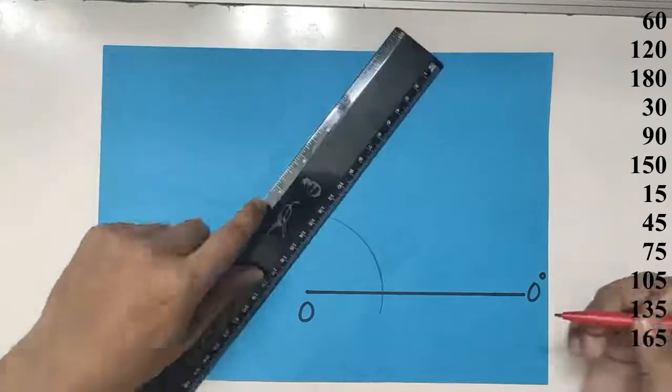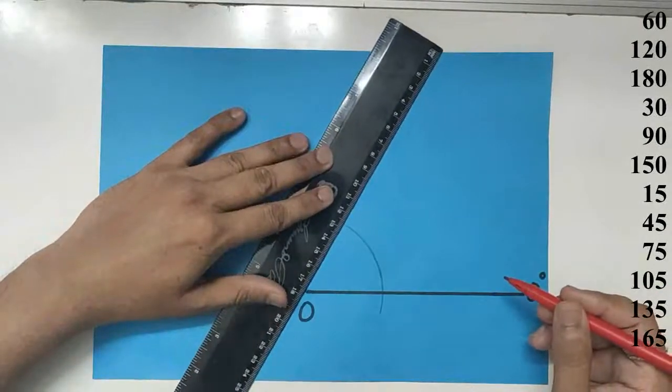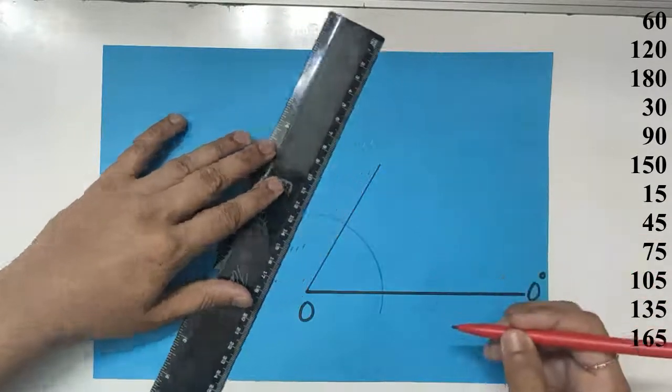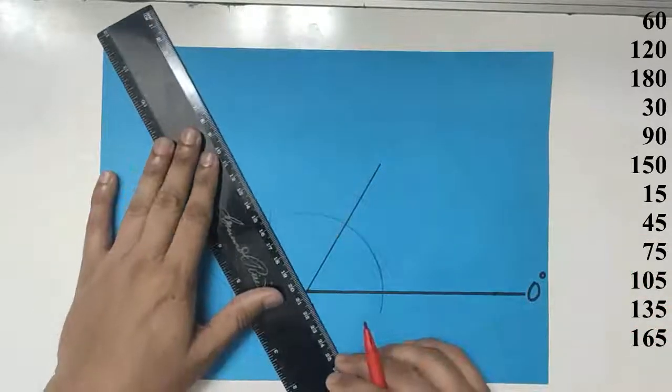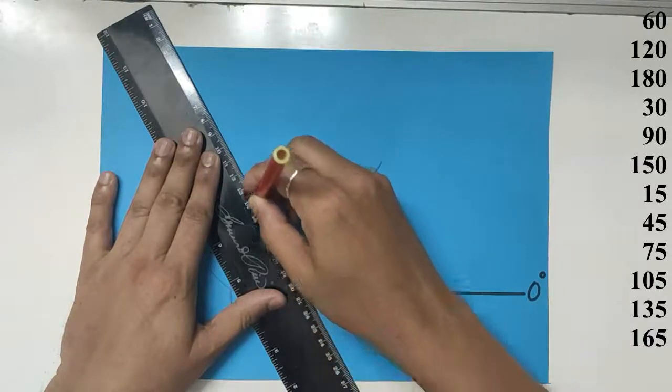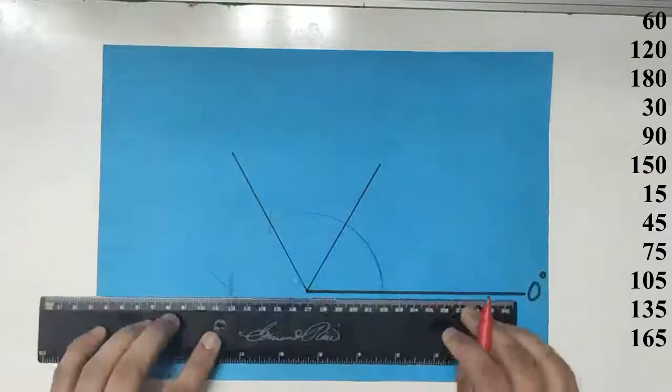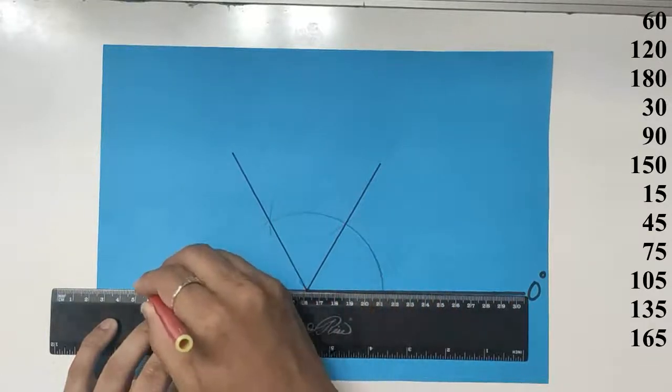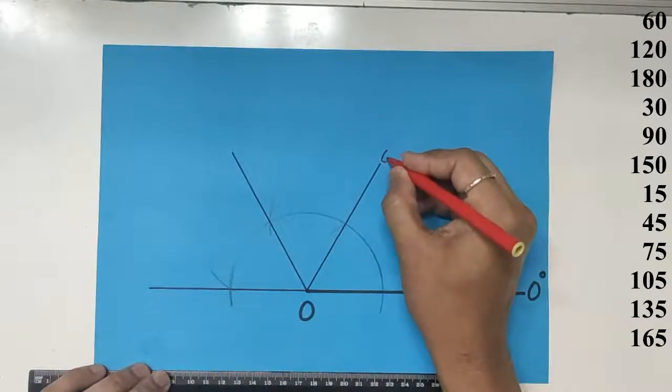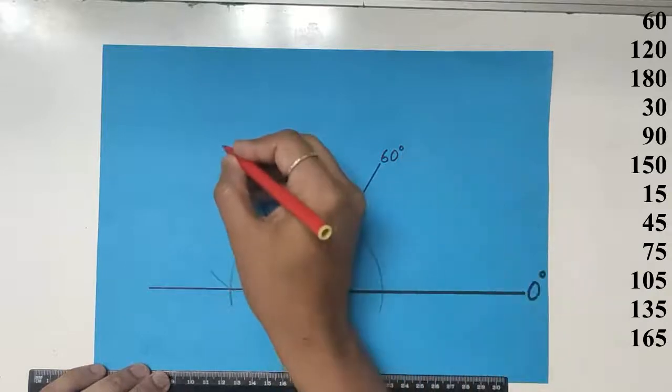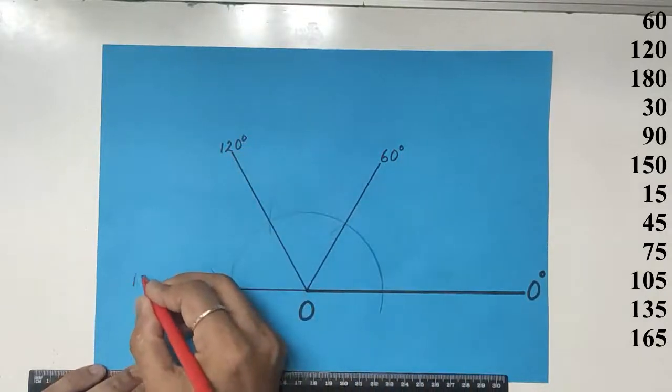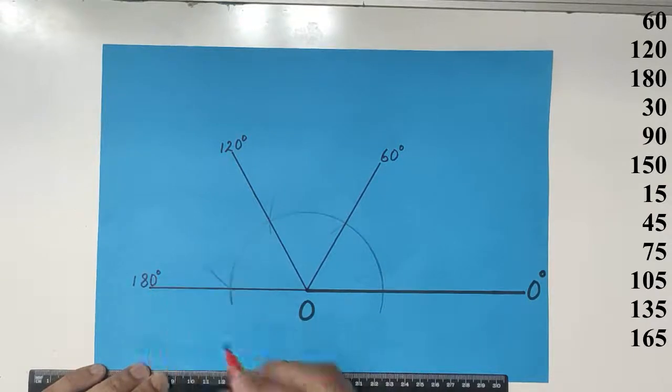We have just drawn your 60 degrees, draw the line. Your 120 degrees, draw the line, and 180 degrees which is actually a straight line. That's 60 degrees, 120 degrees and 180 degrees.